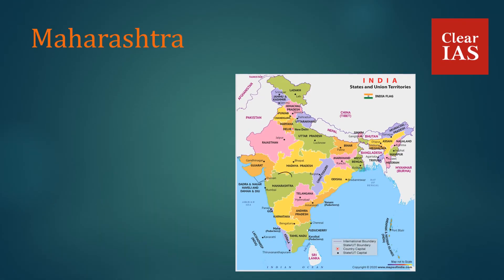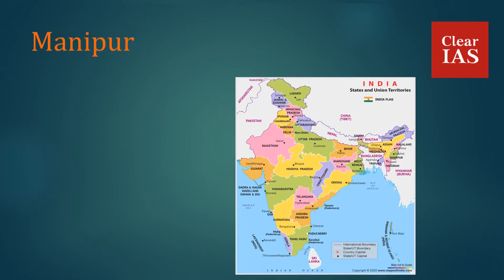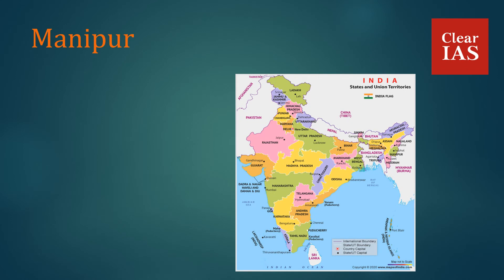In Maharashtra, we have Chandoli National Park, Gugamal, Navegaon, Sanjay Gandhi, and Tadoba National Park. In Manipur, we have Keibul Lamjao National Park, which is the only floating National Park in the world, and Sirohi National Park.